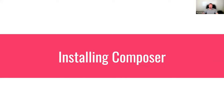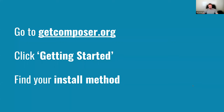The installation process is a little different depending on your machine — it can be installed on Windows, Linux, and Mac. Go to getcomposer.org and click on 'Getting Started' — don't be fooled by the download link — and look for the install method for your particular machine. If you don't have it installed, I recommend doing that while you listen; if you do have it installed, try out some of these things as we walk through.